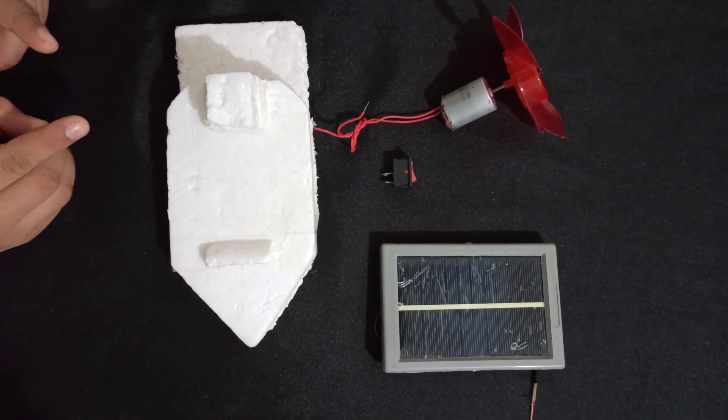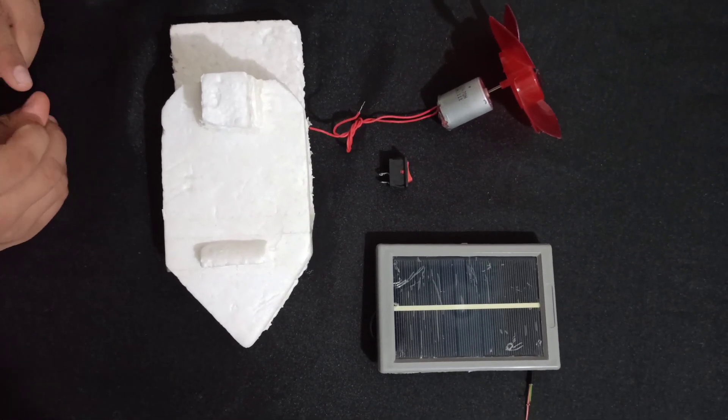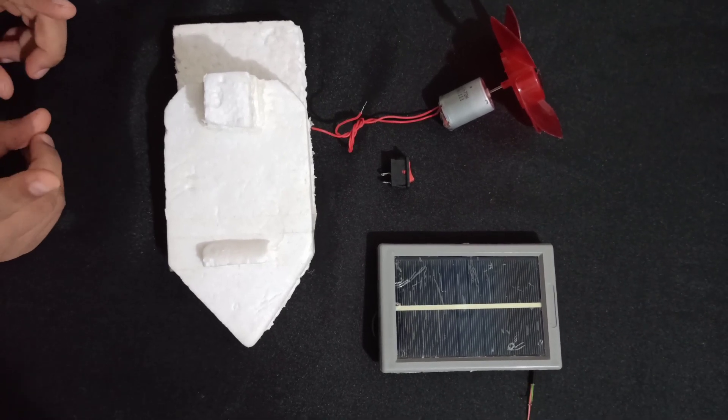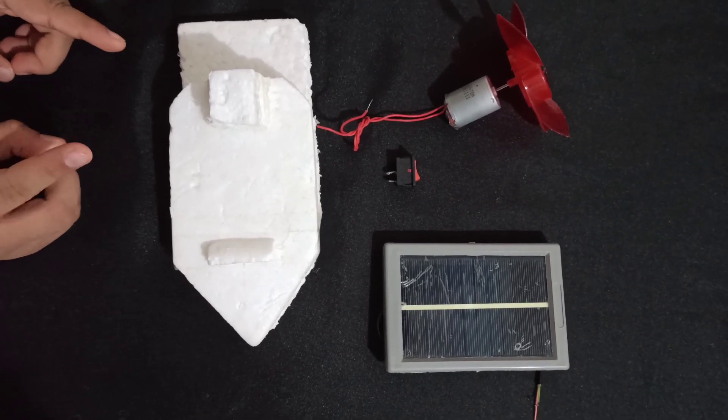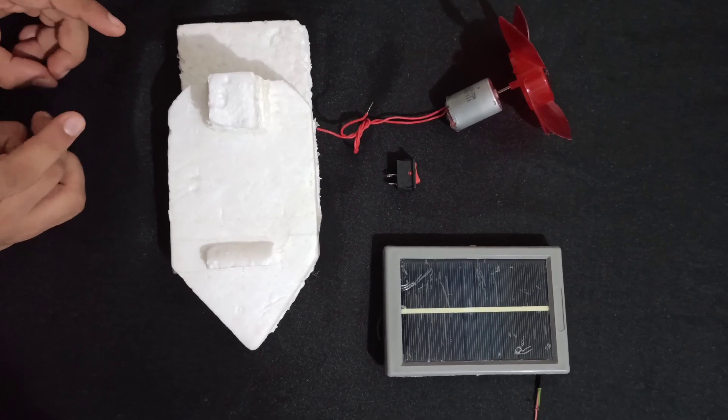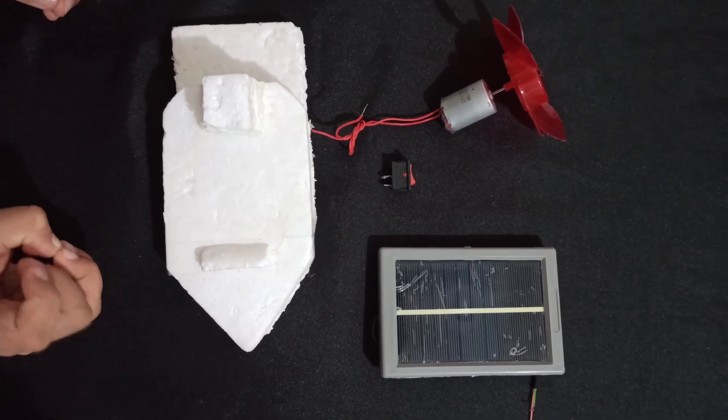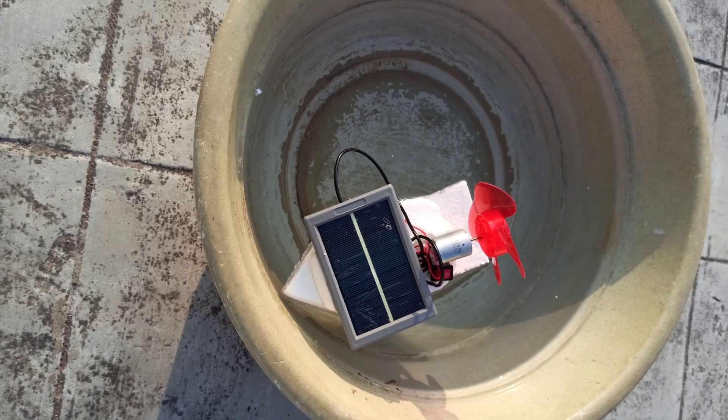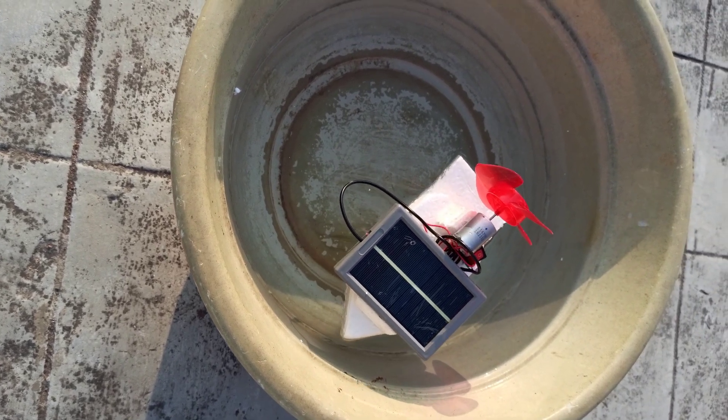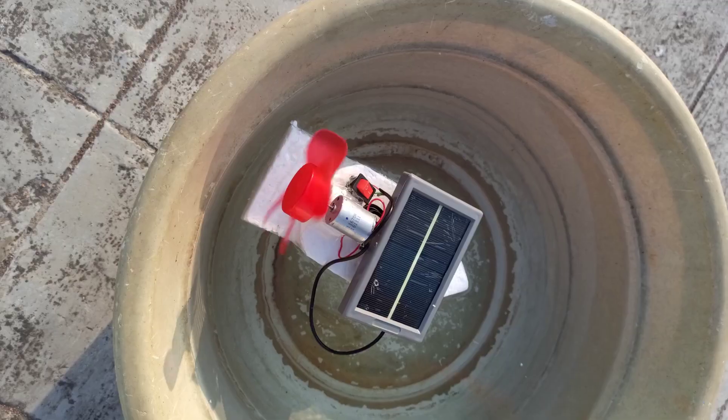Let's assemble it with the help of soldering iron and hot glue gun, then test it on the water surface. After assembling, my solar boat is looking like this. Let's switch on.